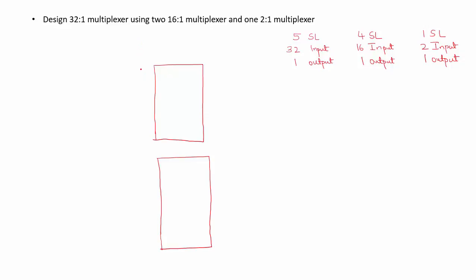The first 16-to-1 multiplexer has 16 data lines starting from D0 and ending at D15. The second 16-to-1 multiplexer also has 16 data lines starting from D16 and ending at D31. So the 32 input lines are covered.